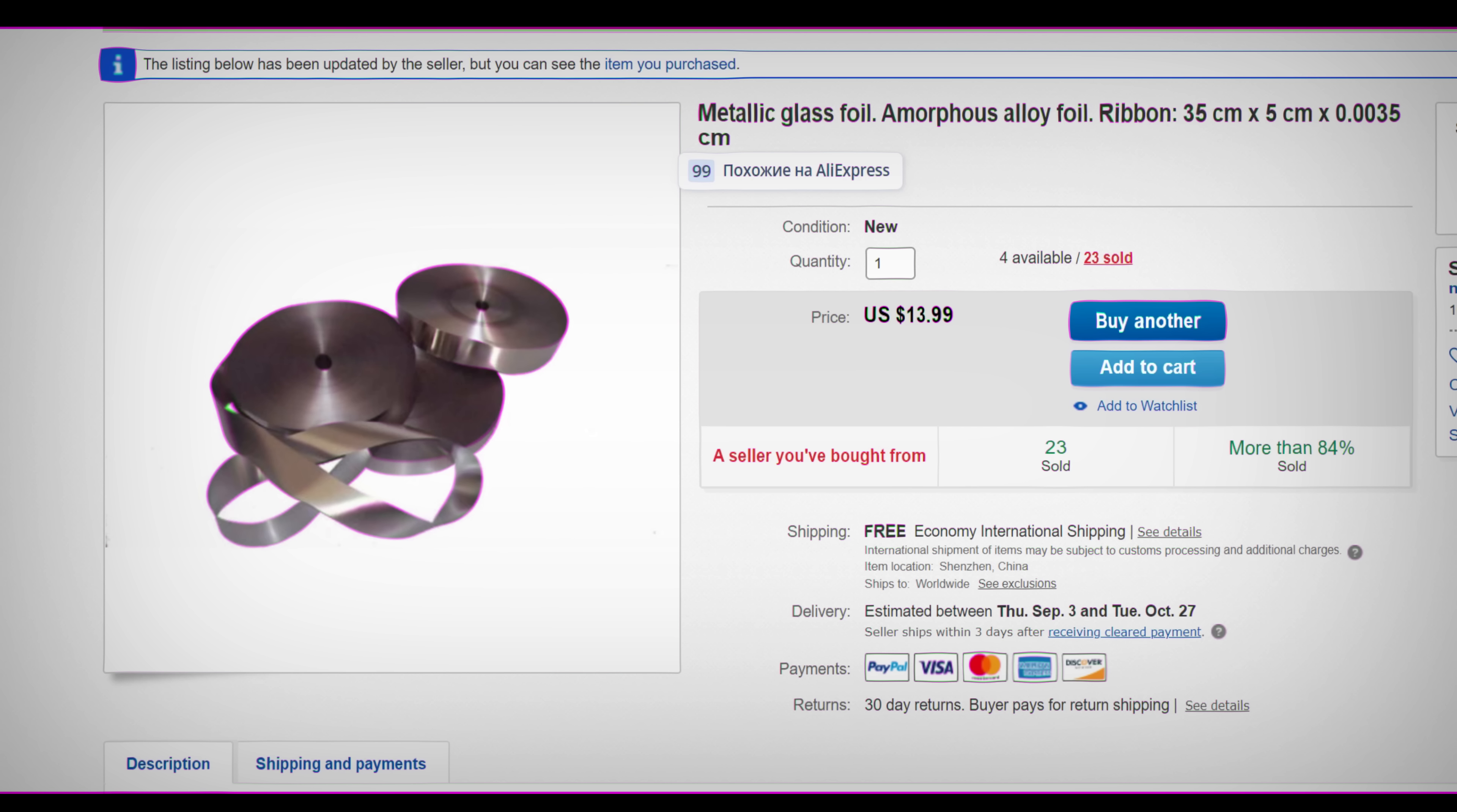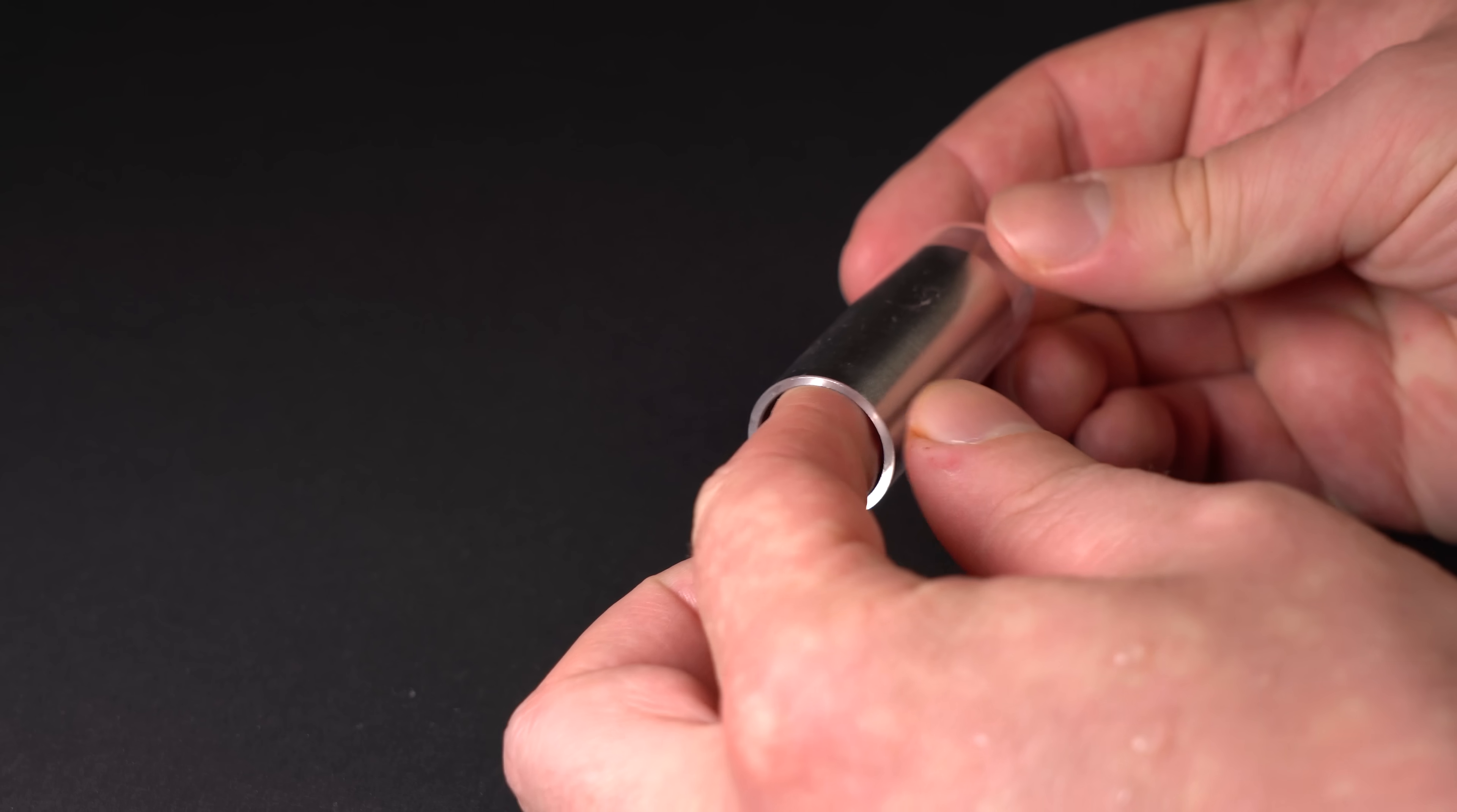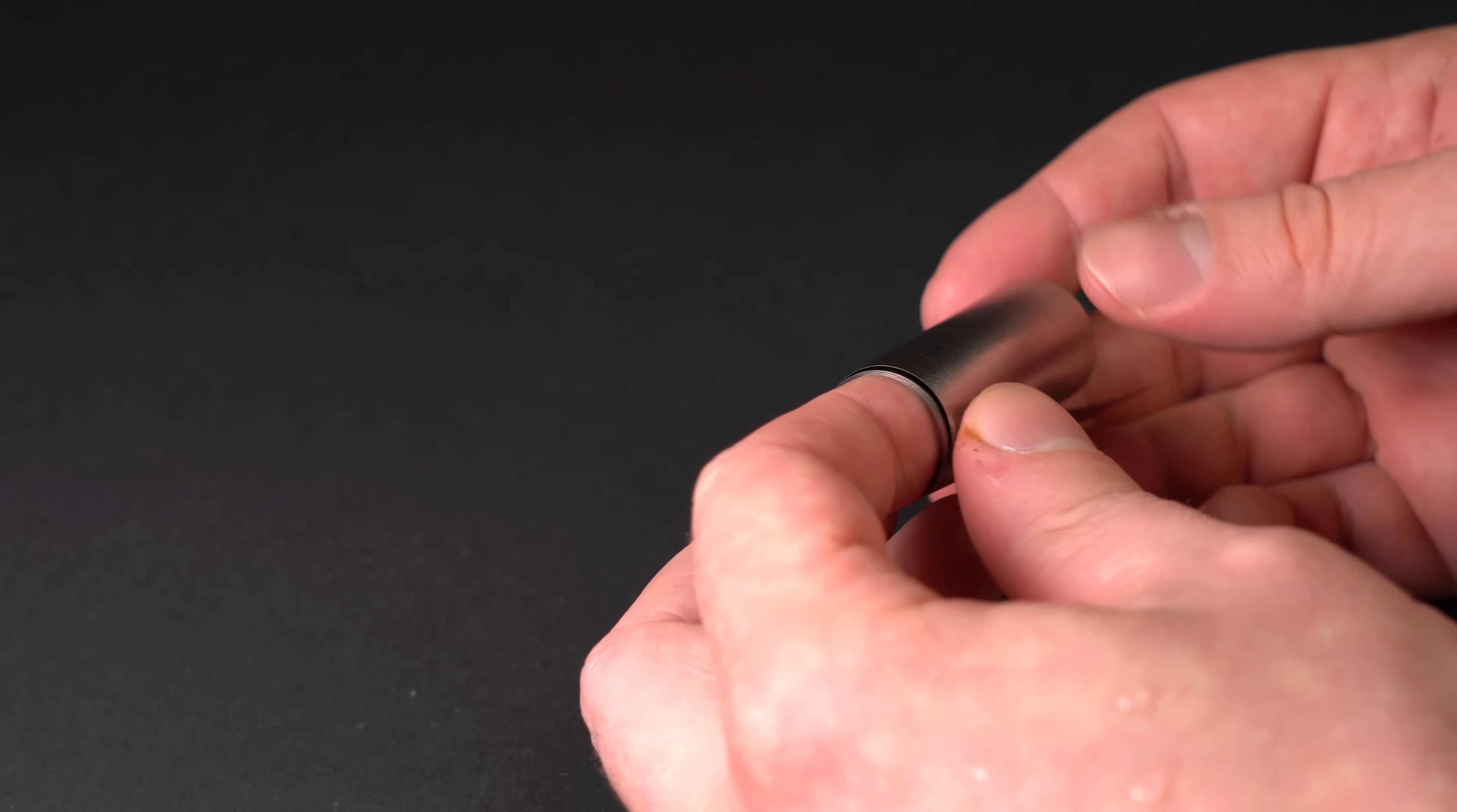I failed to find those beautiful and quite weighty nuggets of metallic glass. The only thing I managed to find was this thin metallic glass strip, which is also called amorphous metal. First, let us consider this wonder material using this metallic strip and then we'll see how it goes.